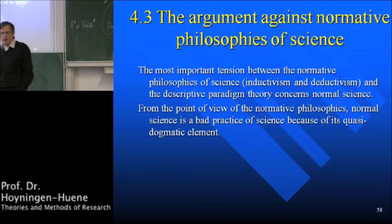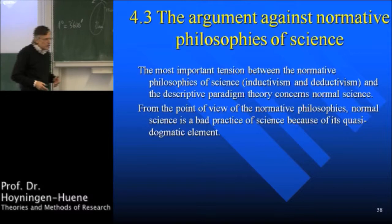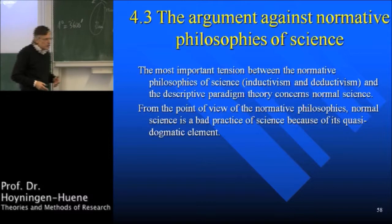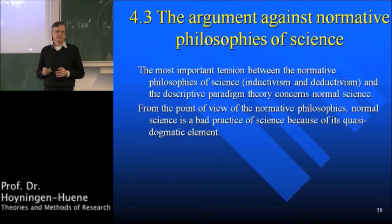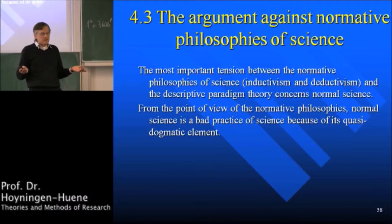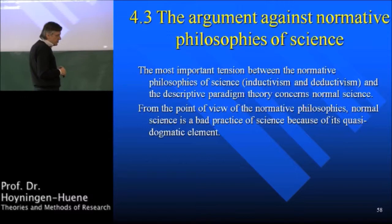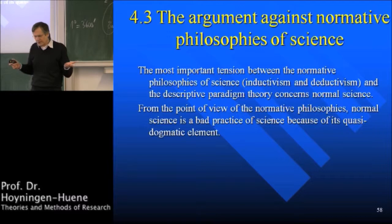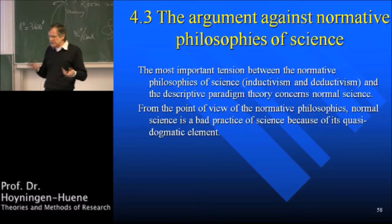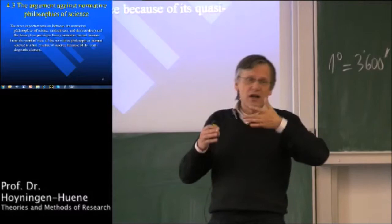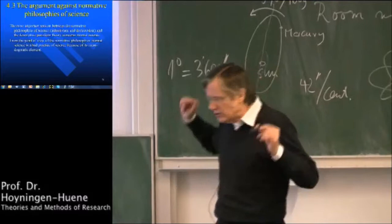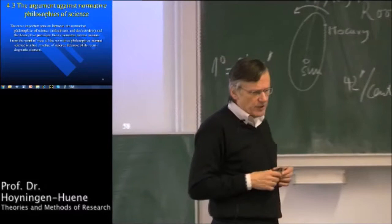The tension is this: from the point of view of the normative philosophies, normal science is a bad practice because of its quasi-dogmatic element. The quasi-dogmatic element means you have a practice of science, like puzzle solving, in which you do not question the basic rules of normal science at all — they are not tested, you are simply applying them. From the point of view of deductivism, this is just bad science because you are not testing these rules. Deductivism says you must always devise more and more tests to possibly falsify them, and you don't do that in normal science. That's why I use the term quasi-dogmatic.